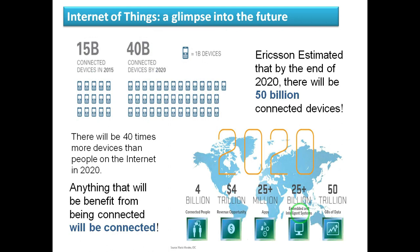In a nutshell, Ericsson estimated that by the end of 2020 there will be 50 billion connected devices, which involves 4 billion connected people and a 4 trillion dollar business opportunity, with nearly 25 million plus mobile and web applications, more than 25 billion embedded and other intelligent systems, and more than 50 trillion gigabytes of data. Anything that will be benefited from being connected will be connected in the near future.